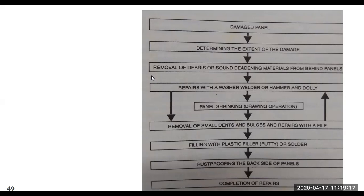After removing debris from the accident-damaged vehicle, you need to repair the different types of panels. These panels have to be repaired with a washer welder, hammer, or dolly. We will see what all these different tools look like and what they are used for. Once repairs are done with a washer welder, hammer, or dolly, you proceed to panel shrinking.